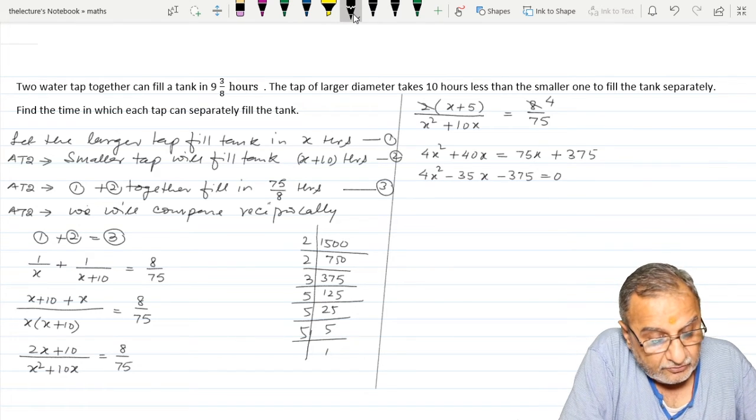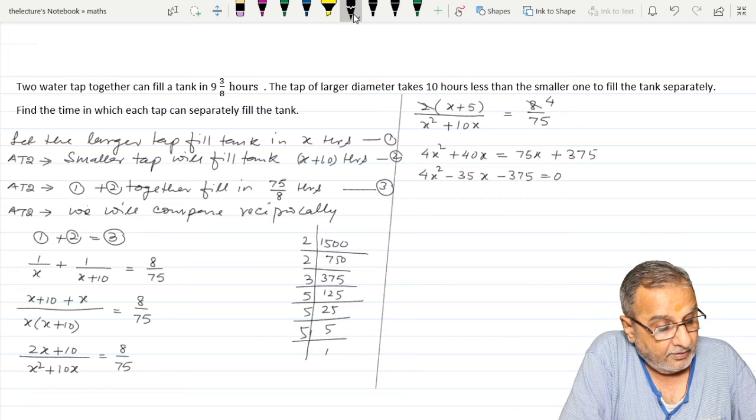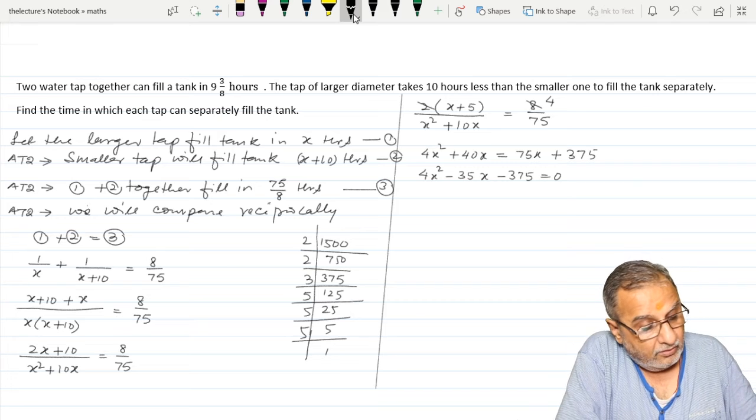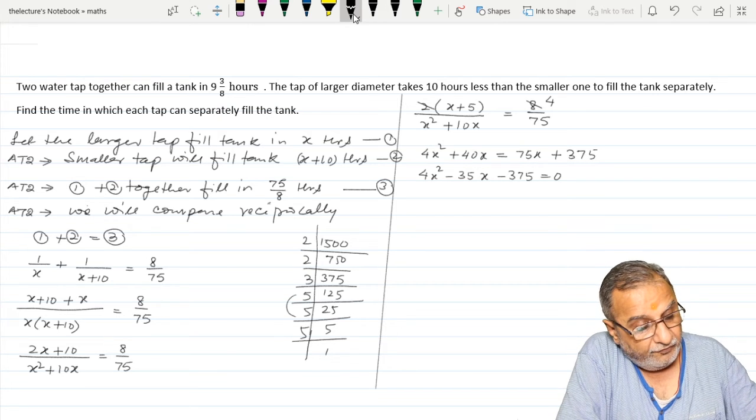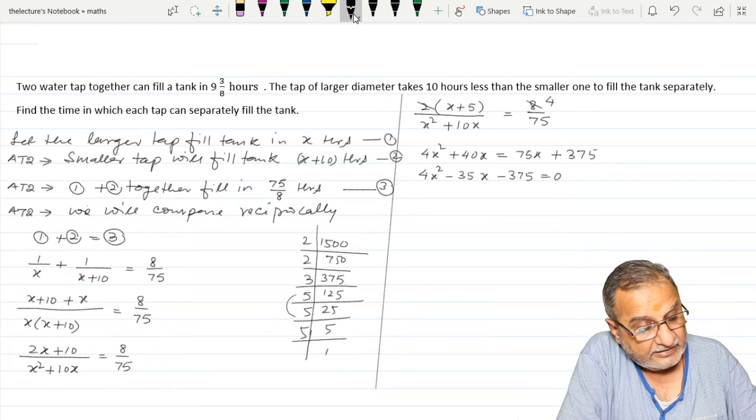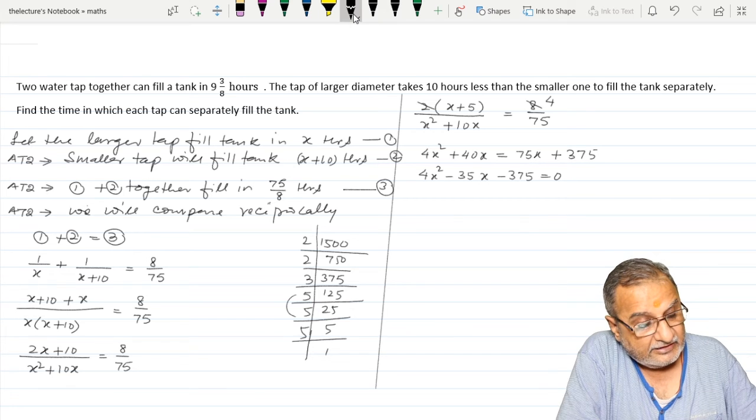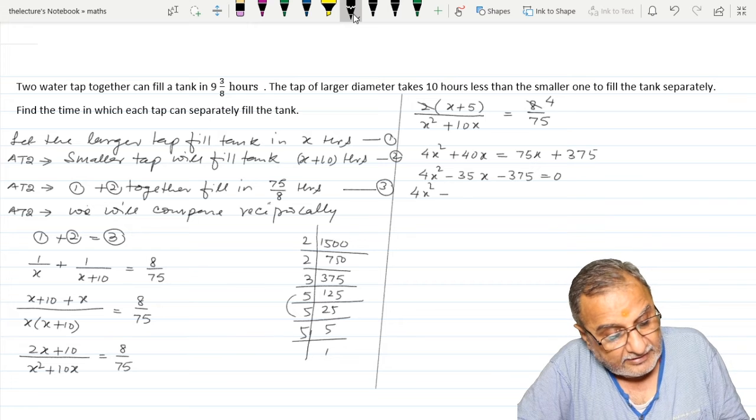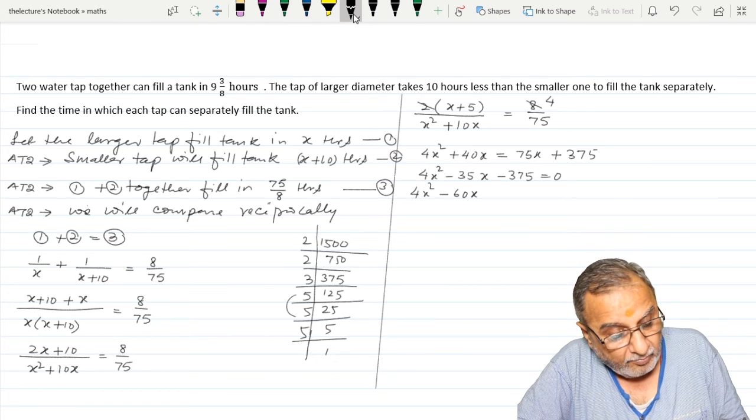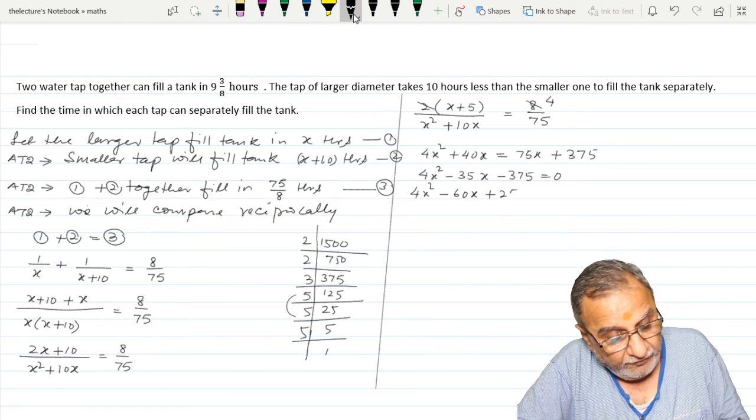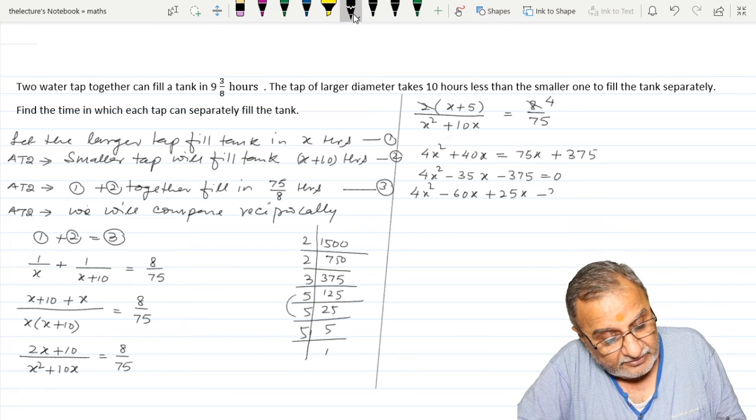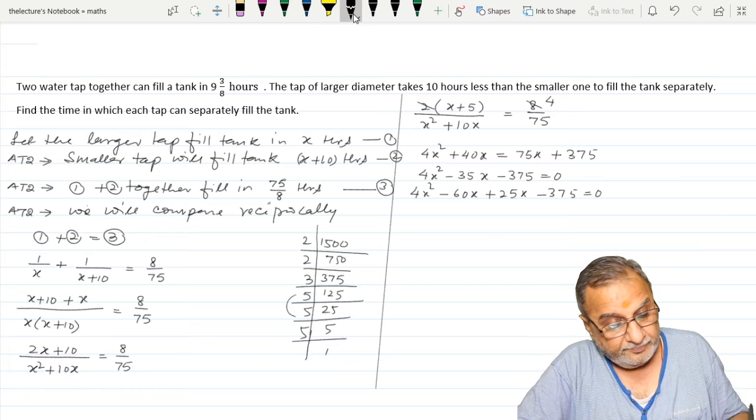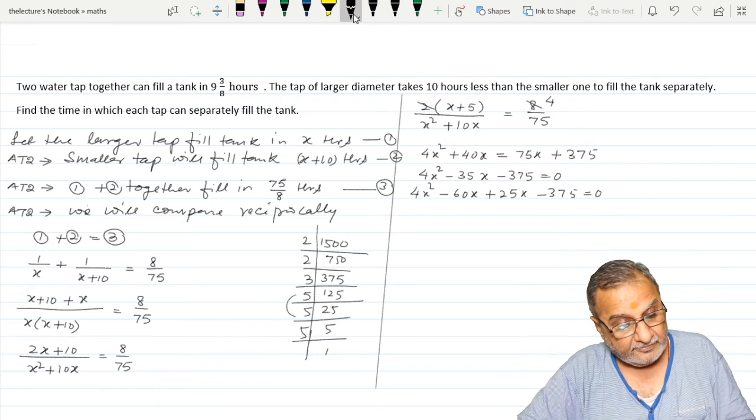So try to split the middle term. 5 times 5 is 25, or 5 times 15 is... 15 times 30 is... 60. So 60 minus 25. Okay. So 4X squared minus 60X plus 25X minus 375 equals 0. I have split the middle term.